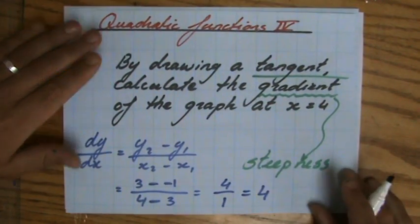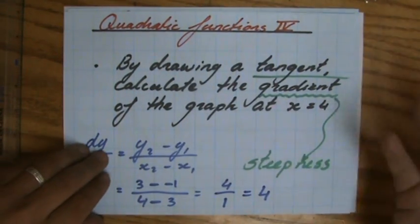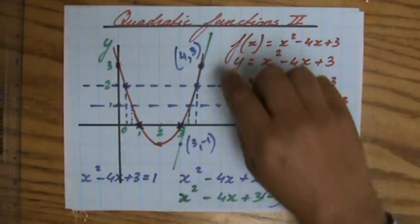So the gradient, the steepness, is going to be 4 as well. That happens to be a coincidence, yeah, at point x equals 4.